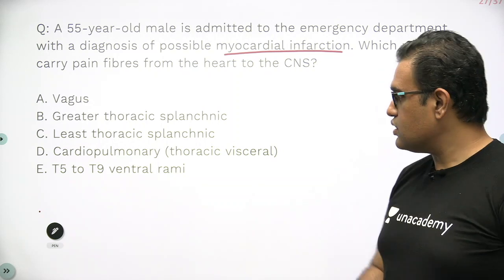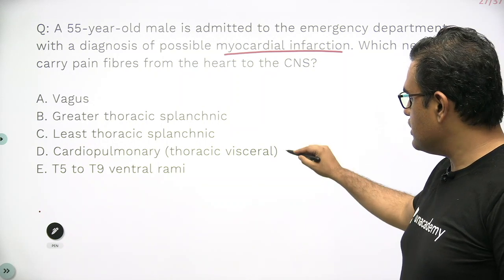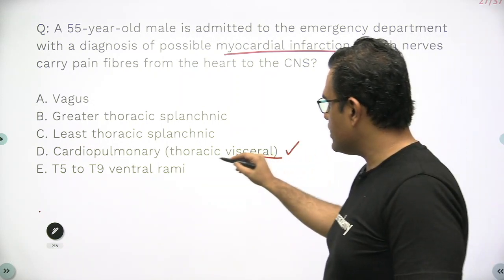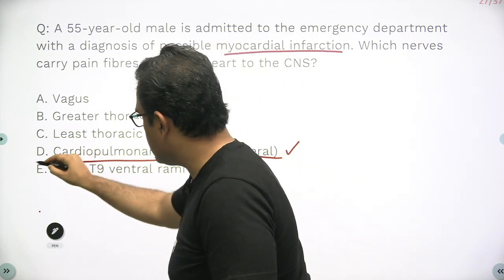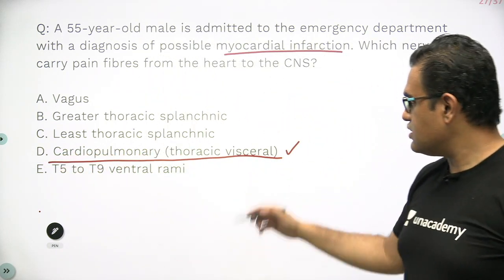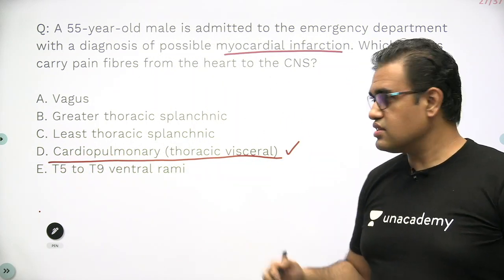The answer for this question is option D — that is, the cardiopulmonary or thoracic visceral nerve branches — because these are the afferents.